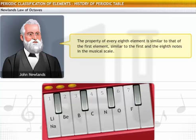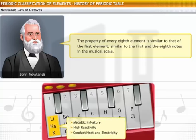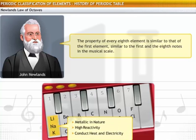Starting with lithium, the eighth element from lithium is sodium. Similarly, the eighth element from sodium is potassium. Lithium, sodium, and potassium show similar properties. For example, they are metallic in nature, have high reactivity, and conduct heat and electricity.